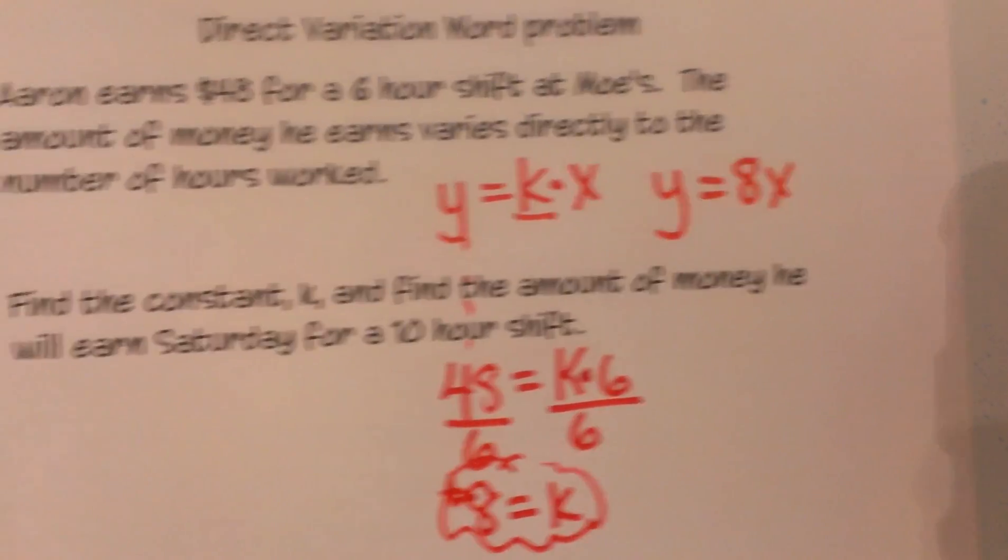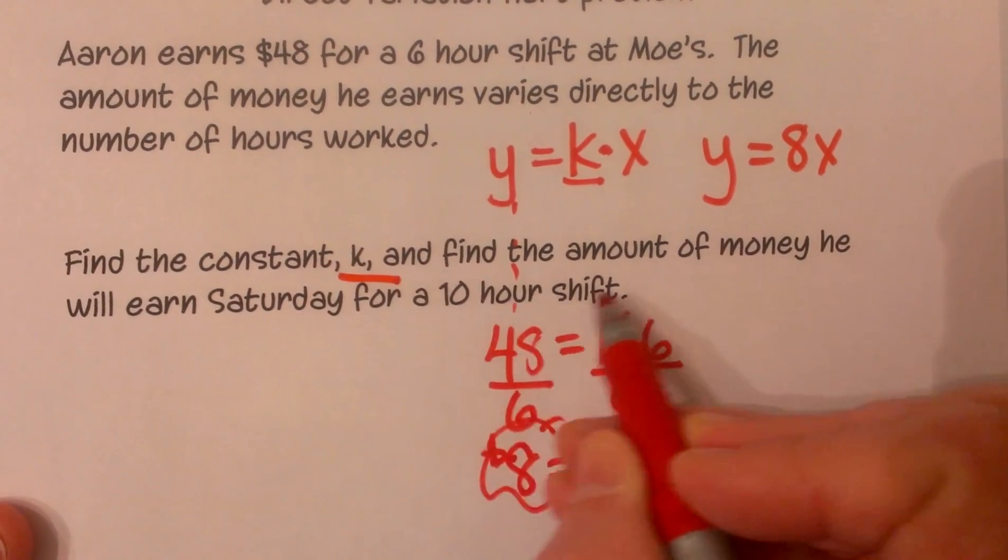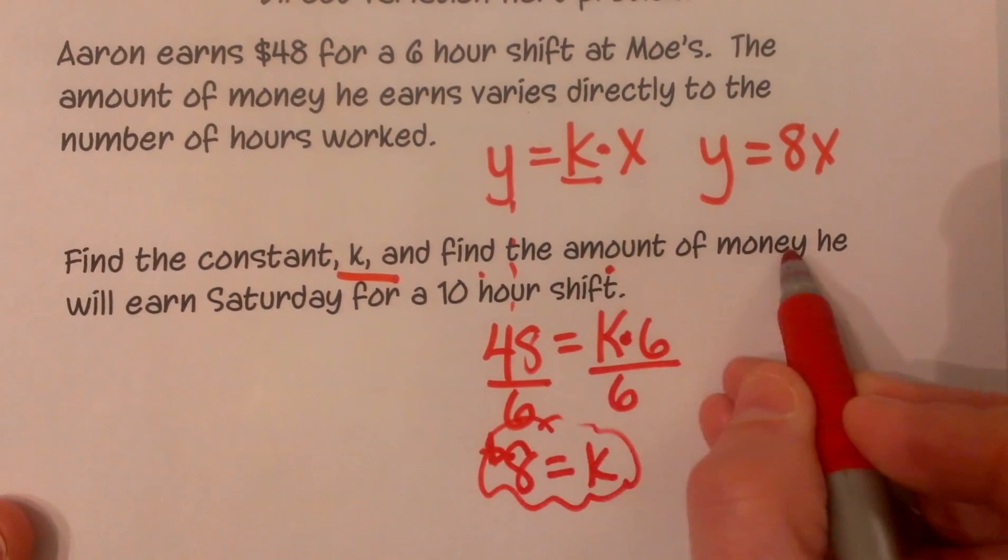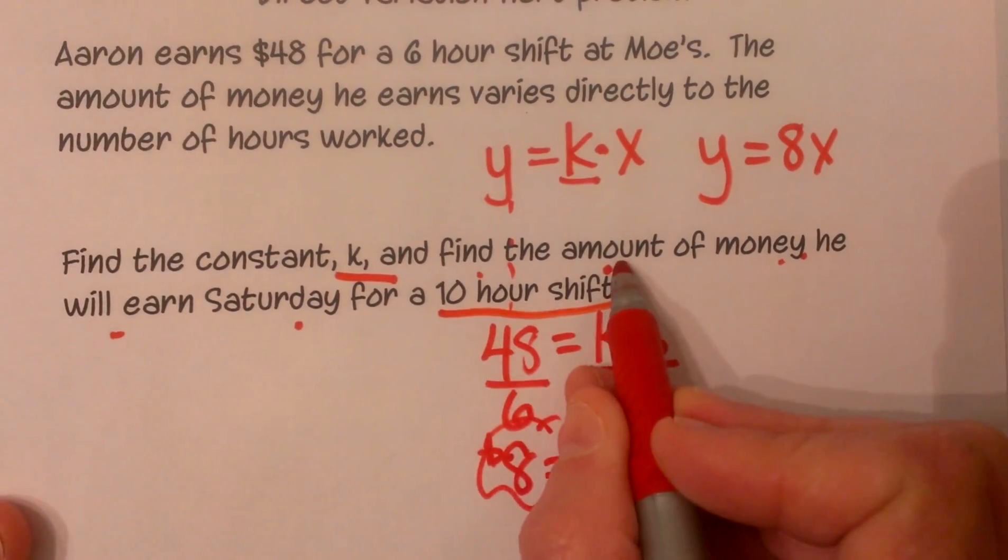Now let's look at our new situation. We found the constant k, so we have done that part. Now we need to find the amount of money he can earn on Saturday for his 10 hour shift.